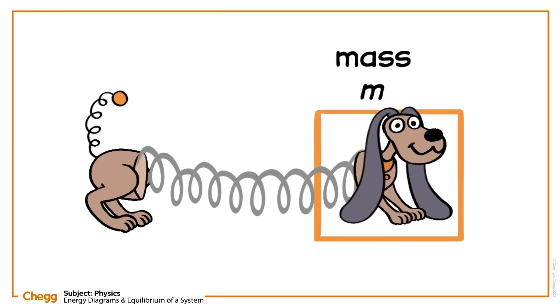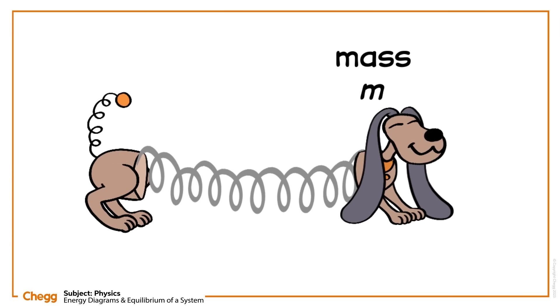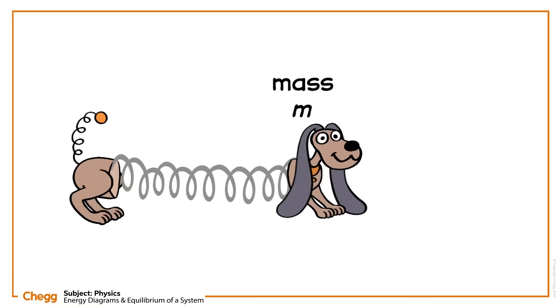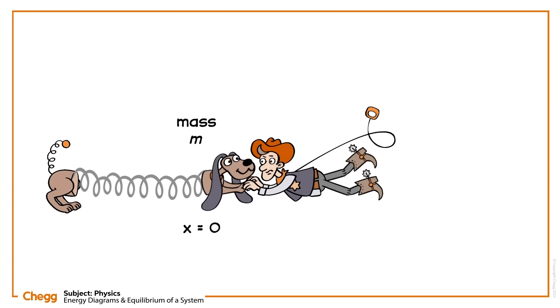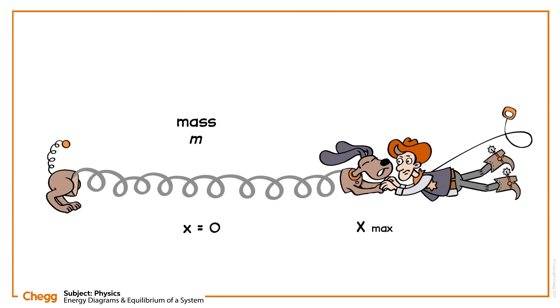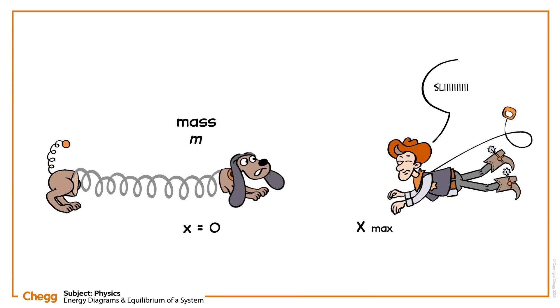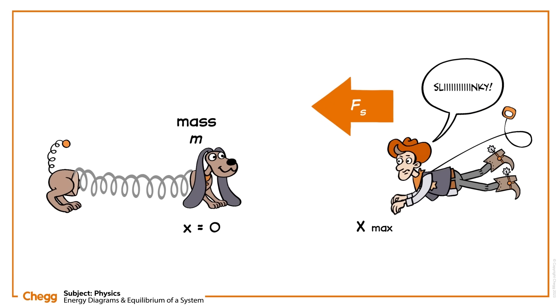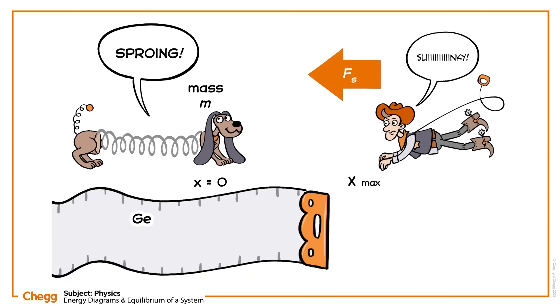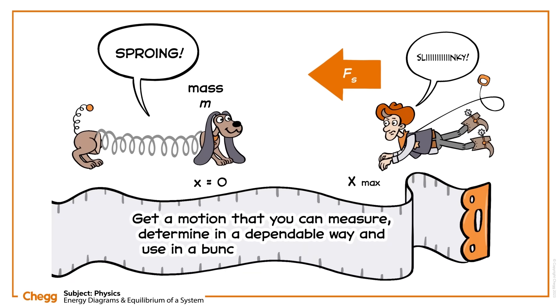Imagine that a block with mass m is placed at rest on a frictionless surface at the equilibrium position of the spring, x equals zero. Now, if you stretch that spring rightwards by a distance x max using an external force and then release the block, the block will move leftwards according to the spring force fs. You get a neat sproing, but you also get a motion that you can measure and use in a bunch of different ways.